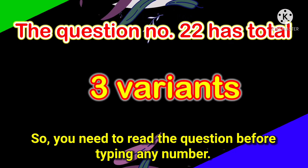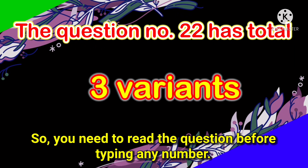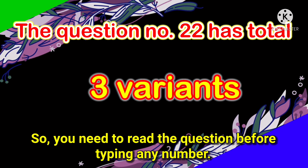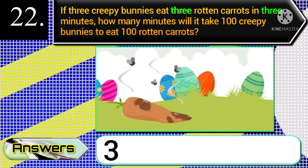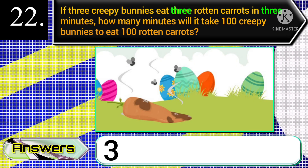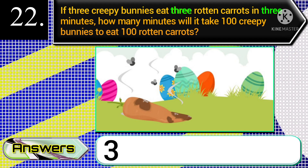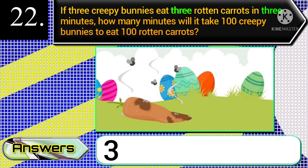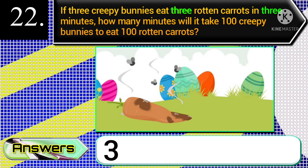Question number 22 has total three variants, so you need to read the question before typing any number. In variant one: if 3 creepy bunnies eat 3 rotten carrots in 3 minutes, how many minutes will it take 100 creepy bunnies to eat 100 rotten carrots? You need to type the answer 3.